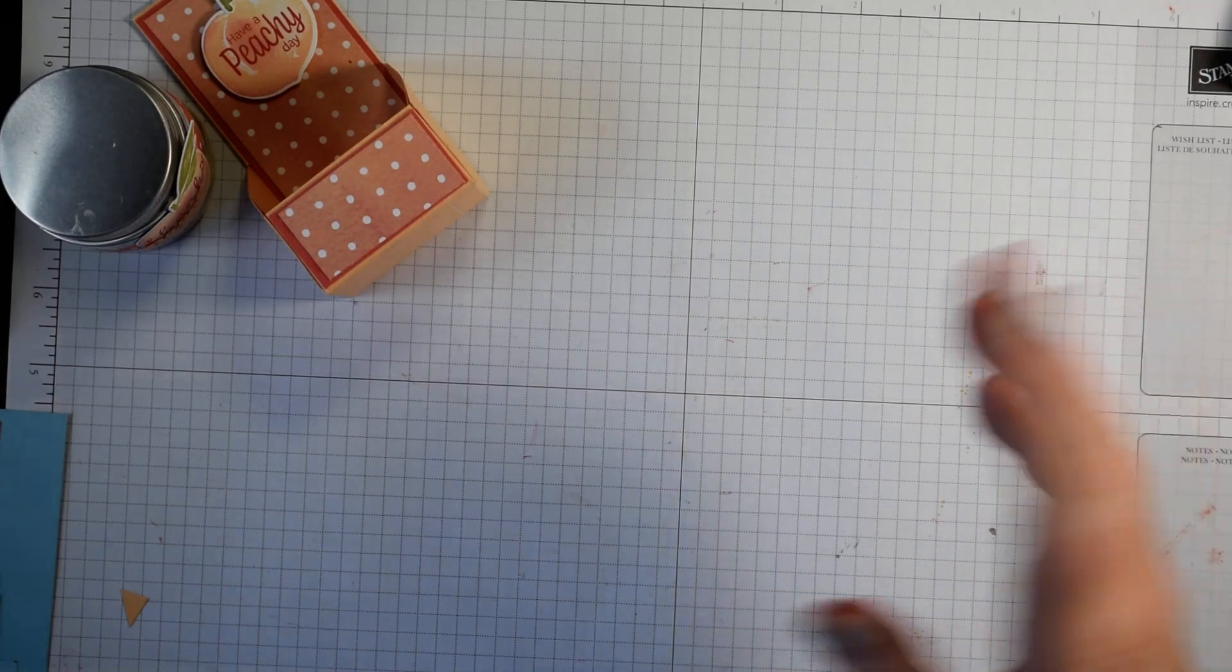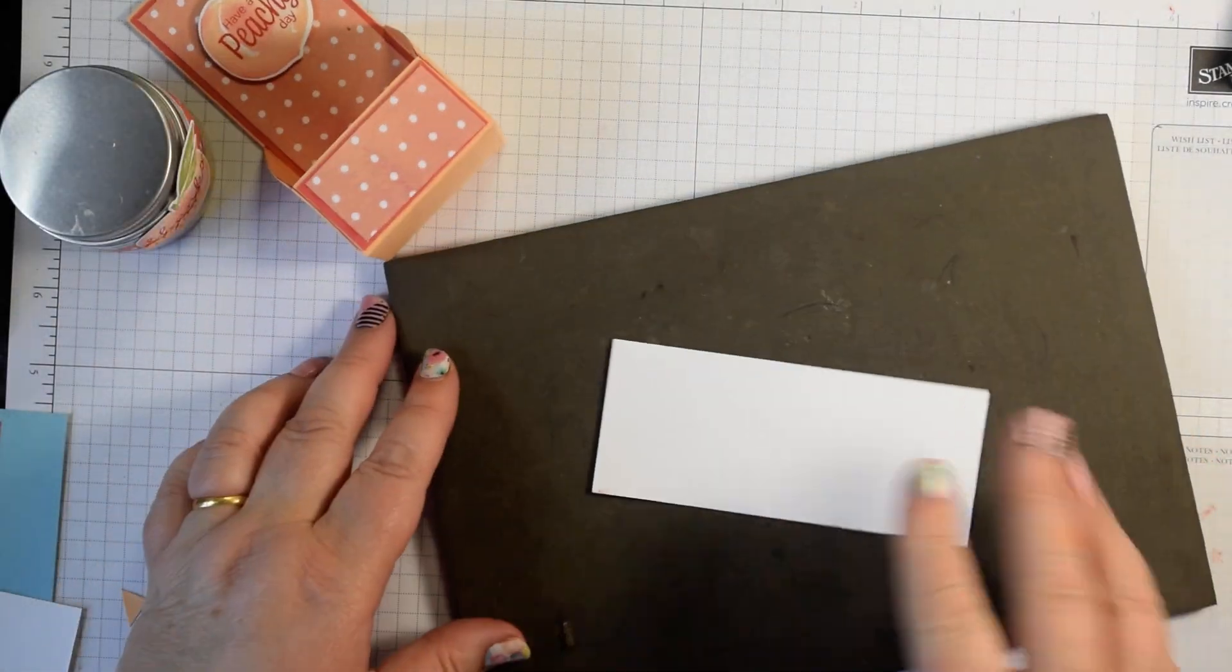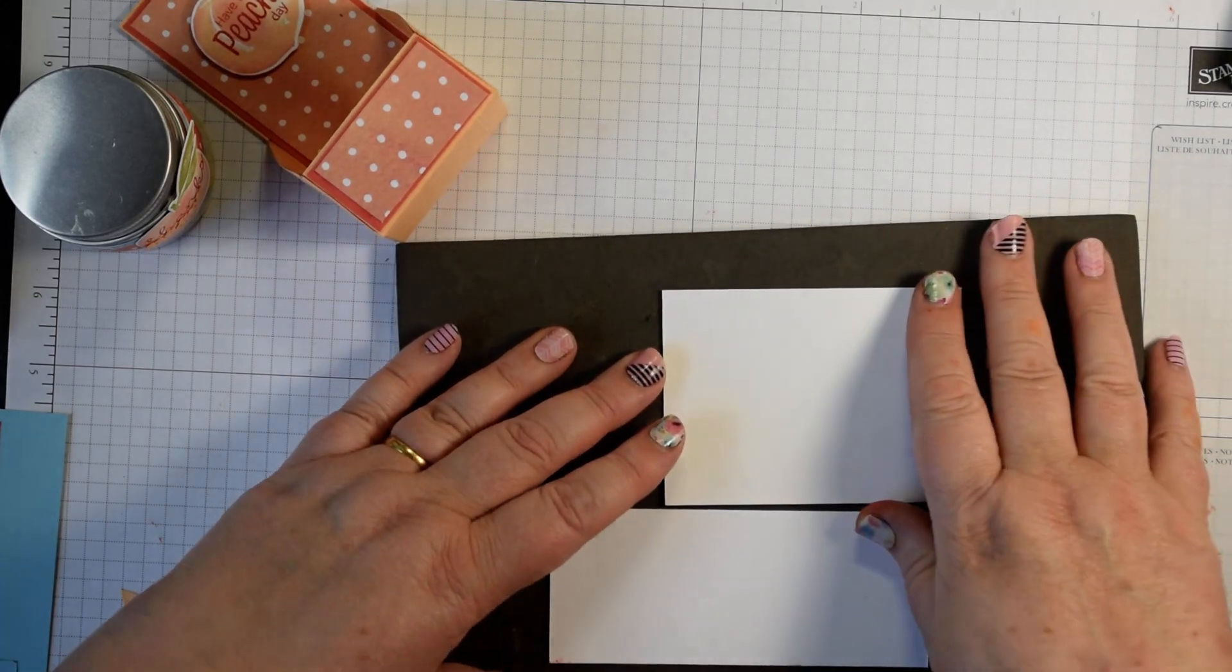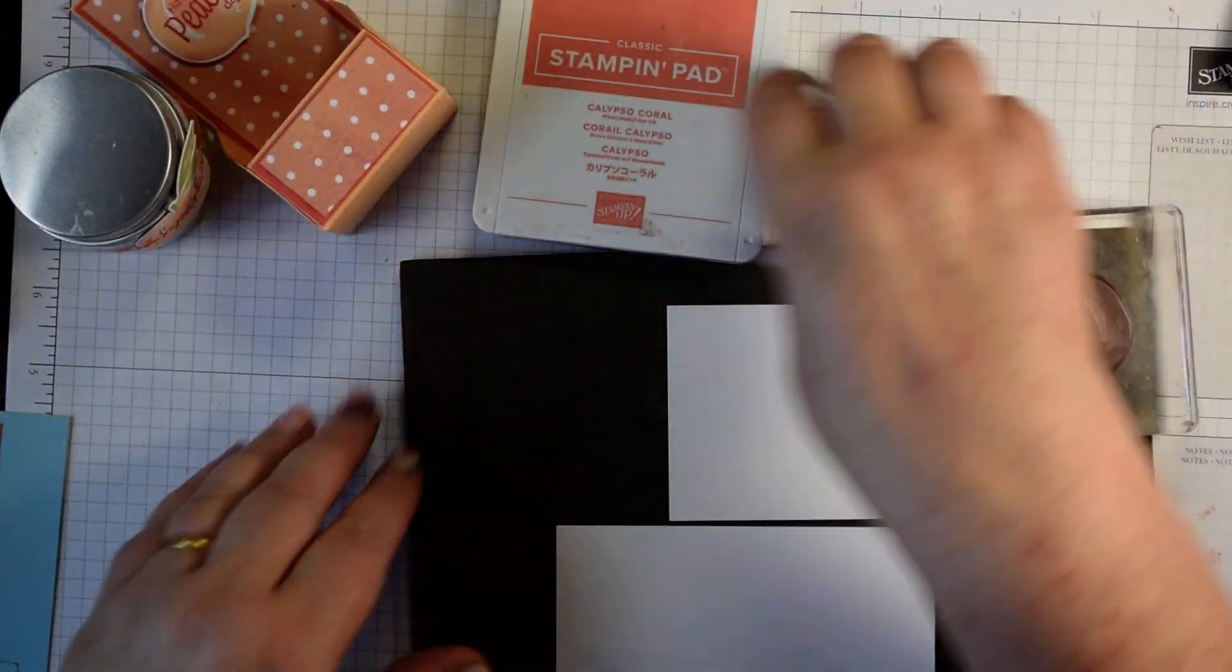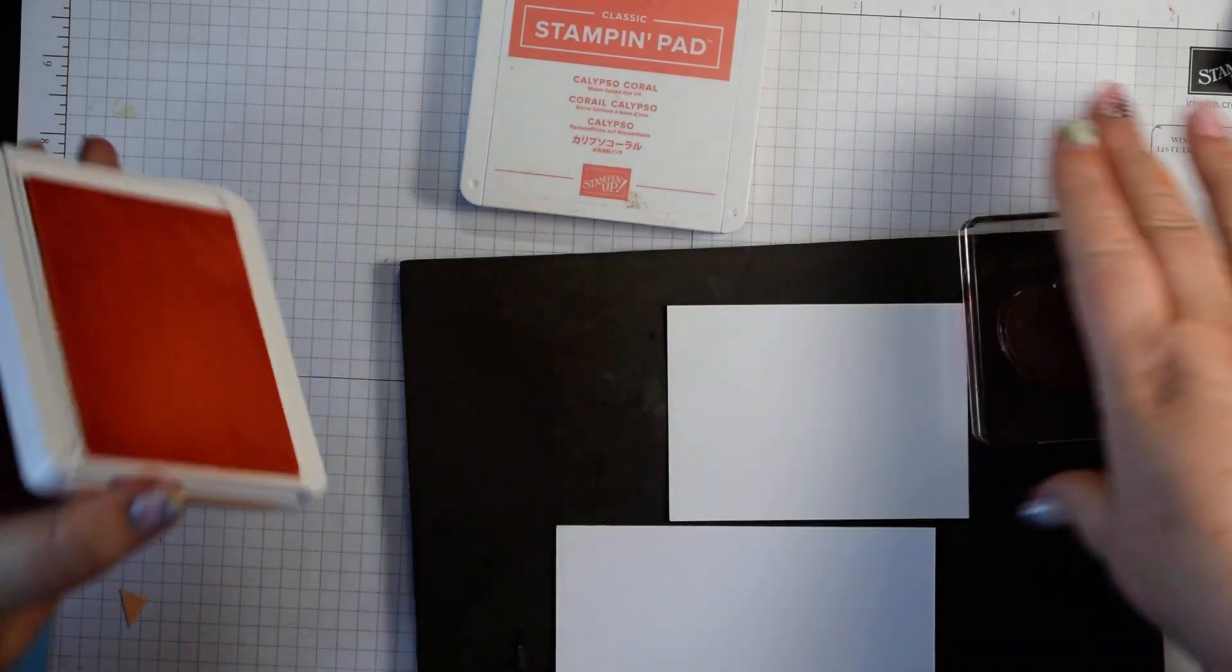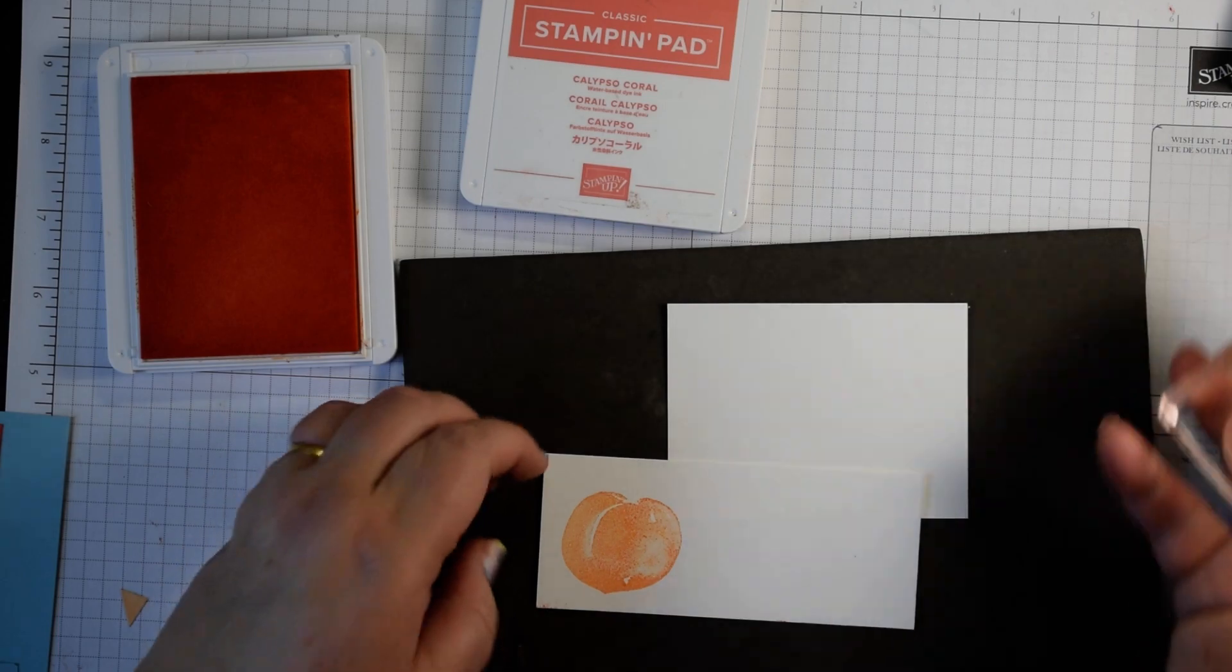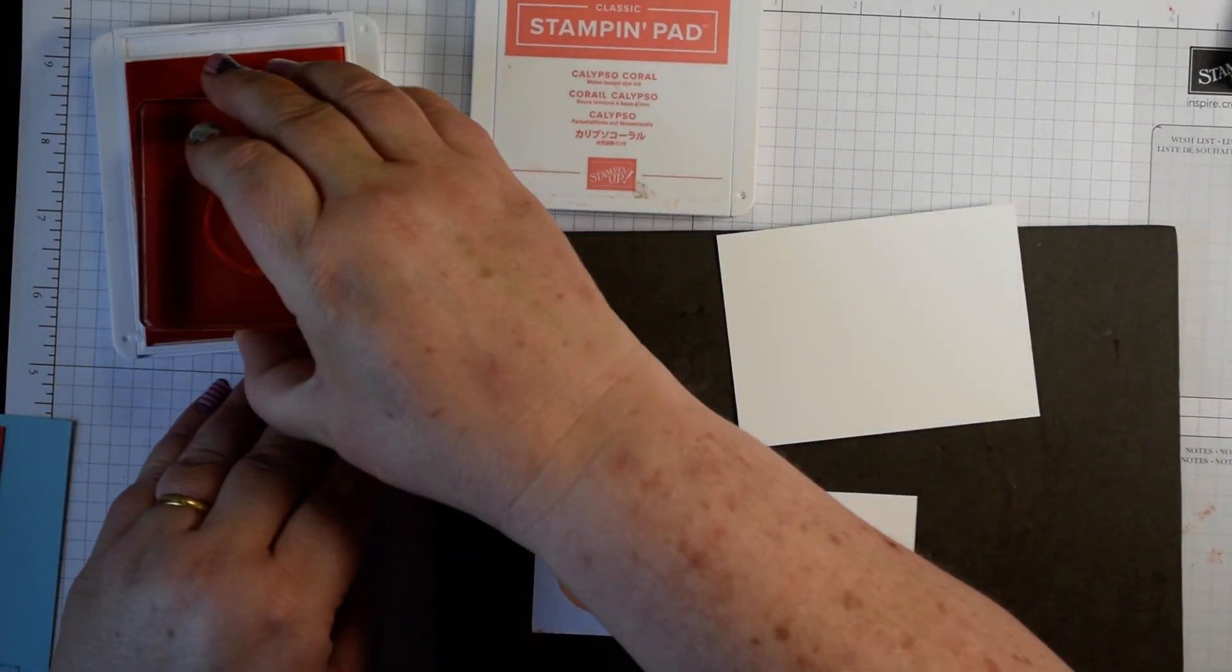First of all let's stamp a couple of our peach stamps. All I'm going to do here is just take a scrap of basic white and I'm going to stamp my peaches. For that I recommend you grab one of our sponge daubers as well to add a bit of color and I'll show you why. You could stamp it straight away in pale papaya, just like this. It looks pretty but it's kind of, if you stamp it again.